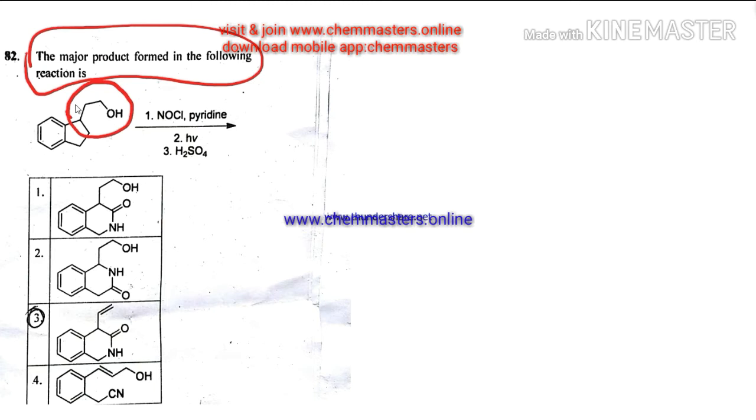Go to reagent combinations and reaction conditions as a second step in problem solving skills and just look at them. Here we have given with NOCl, pyridine, and photochemical conditions followed by H2SO4.